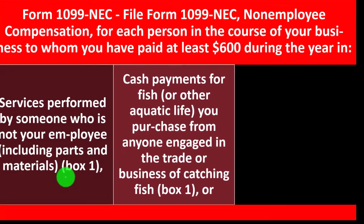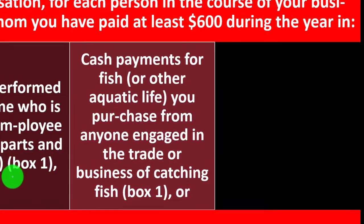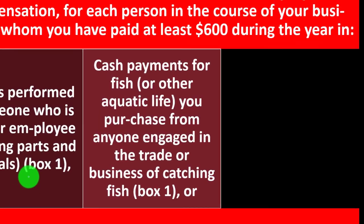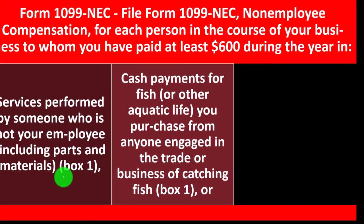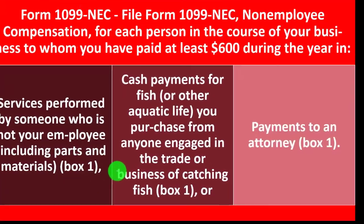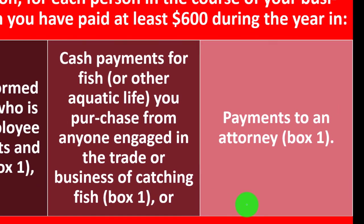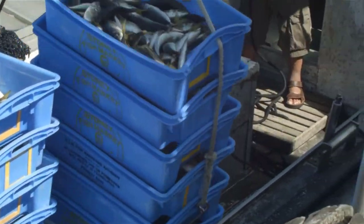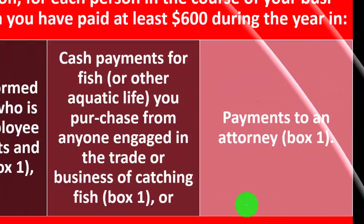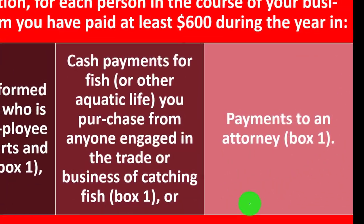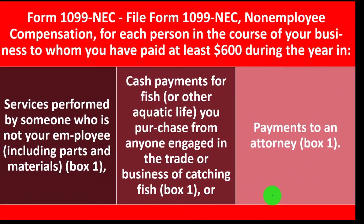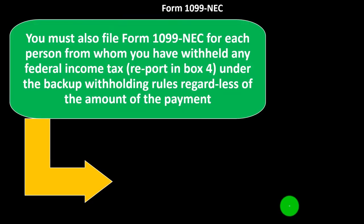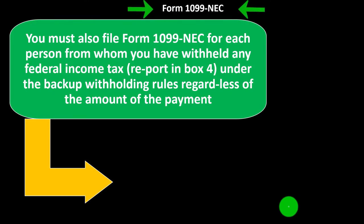Cash payments for fish or other aquatic life you purchase from anyone engaged in the trade or business of catching fish go in box one. That's a real category — if you're in the fish-catching business, which is a big business. Payments to an attorney also go in box one on Form 1099 NEC.